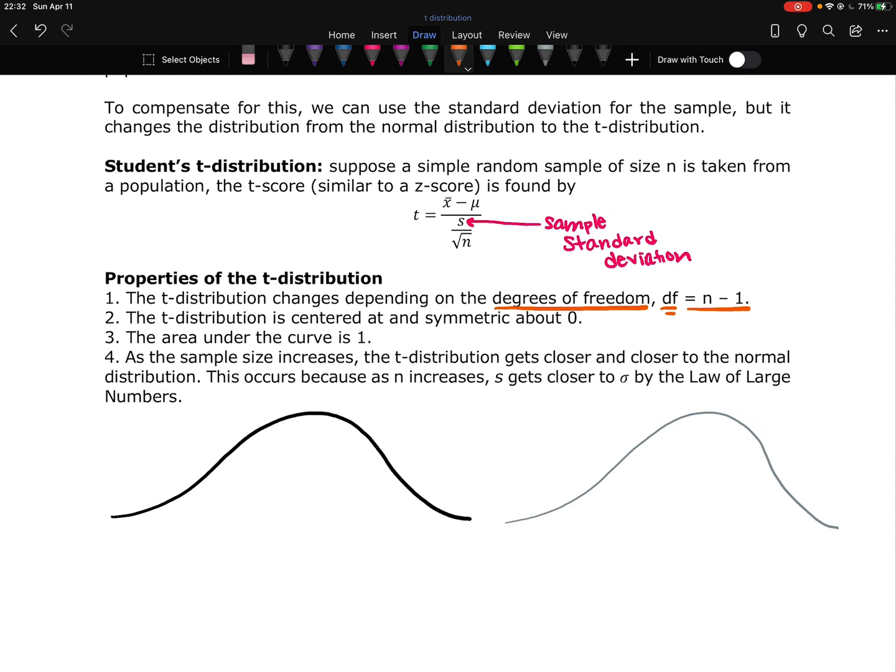If you have a smaller sample, the bell shape is going to be more spread and more squished. Whereas if you have a larger sample, it's not going to be as squished. And eventually, the t-distribution ends up looking identical to a normal distribution if you have a large enough sample size.